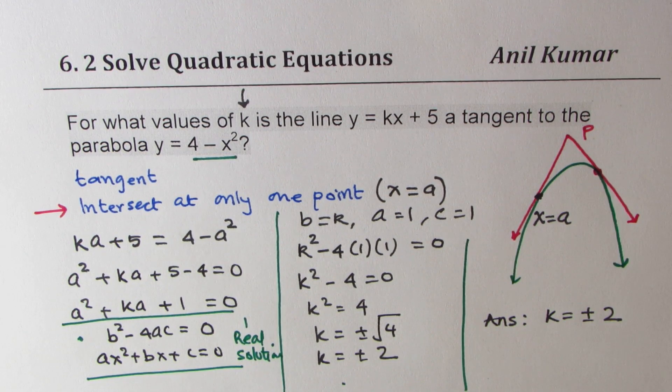However, I hope you understand that in such cases, there could be two values of k, as we just found, where the line will be tangent to parabola. Feel free to write your comments and share your views. If you like and subscribe to my videos, that would be great. Thanks for watching and all the best.